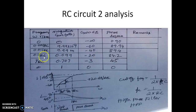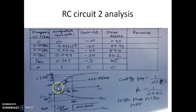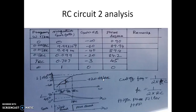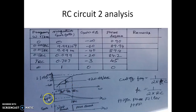Carefully observe: when the frequency ratio is 10 — comparing ω = 0.001/RC and 0.01/RC — 0.01/RC corresponds to −40 dB and 0.1/RC corresponds to −20 dB. As frequency increases by 10 times, the gain increases by 20 dB. So the slope here is plus 20 dB per decade. In the previous circuit the gain was reducing by 20 dB per decade; now it is increasing — a positive slope of +20 dB/decade. The phase starts at 90° and goes down to 0° as ω → ∞. At ω = 1/RC, the phase is exactly 45°.